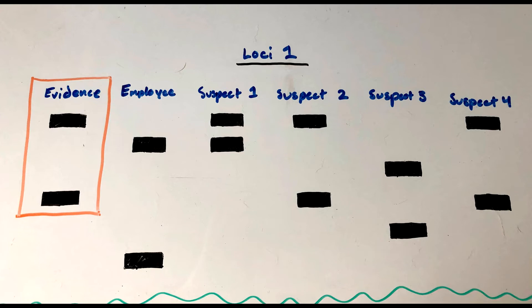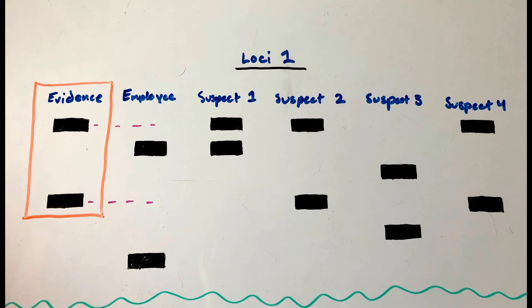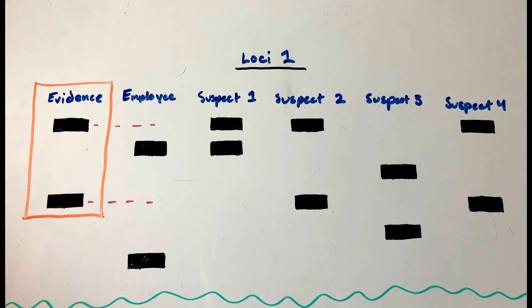This orange box has the evidence from the crime scene. The evidence cannot have come from the employee because the boxes are too far into the gel. Suspect 1 cannot have been the one to leave evidence at the crime scene because only one of the bars matches the position of the evidence bars.